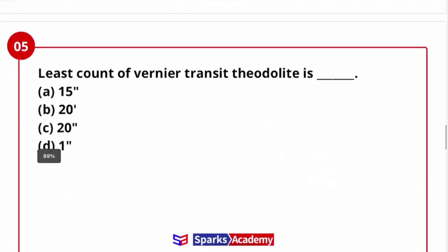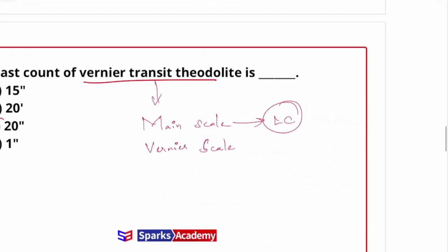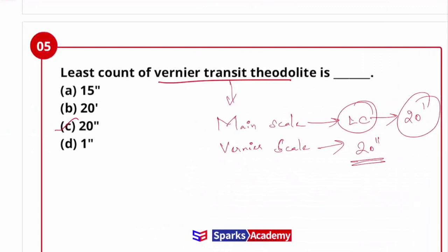Next question, the least count of vernier transit theodolite is 15 seconds, 20 minutes, 20 seconds, and 1 seconds. Actually, vernier transit theodolite least count is 20 seconds. Theodolite usually with the help of main scale and vernier scale readings, means you need to go to main scale, which means what is least count? The least measurement that we can take with the help of the instrument. The least measurement, the instrument Vernier. Main scale is 20 minutes, okay? So vernier scale, the least measurement that we can take is 20 seconds. So important point randomly note. We use the main scale and vernier scale randomly. So answer for this question is 20 seconds.